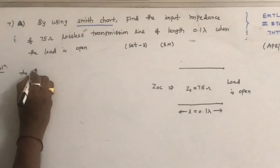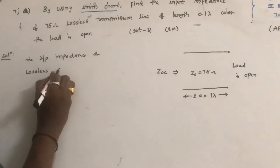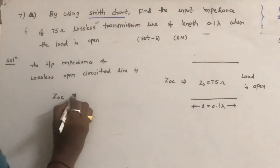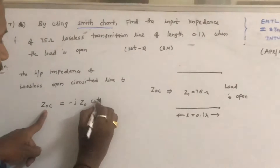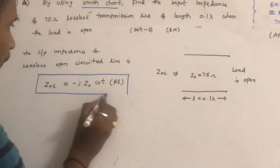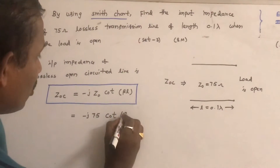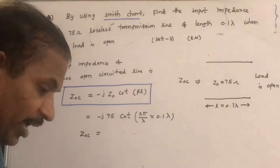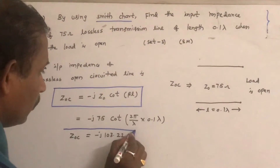The input impedance of a lossless open circuited line, Zoc, is given by the formula: Zoc = -jZ0·cot(βl). So here, Zoc = -j × 75 × cot(2π/λ × 0.1λ). This comes out to Zoc = -j103.22 ohms. So this is the answer for this problem.